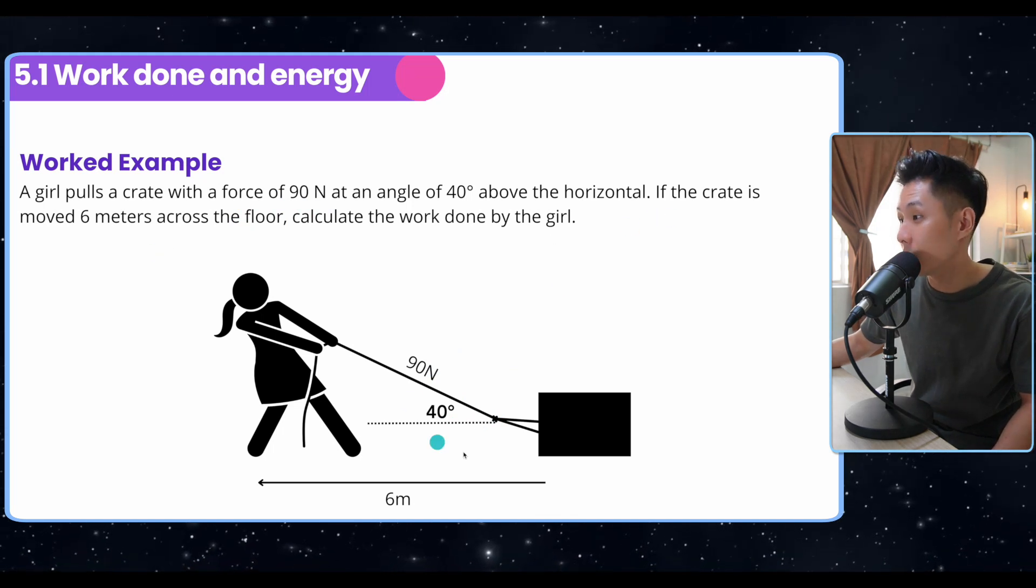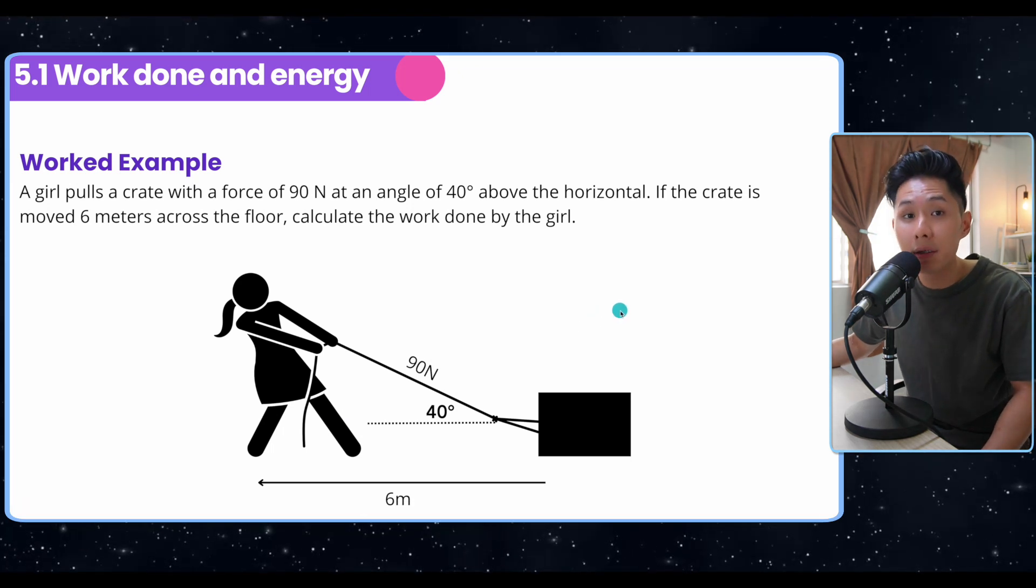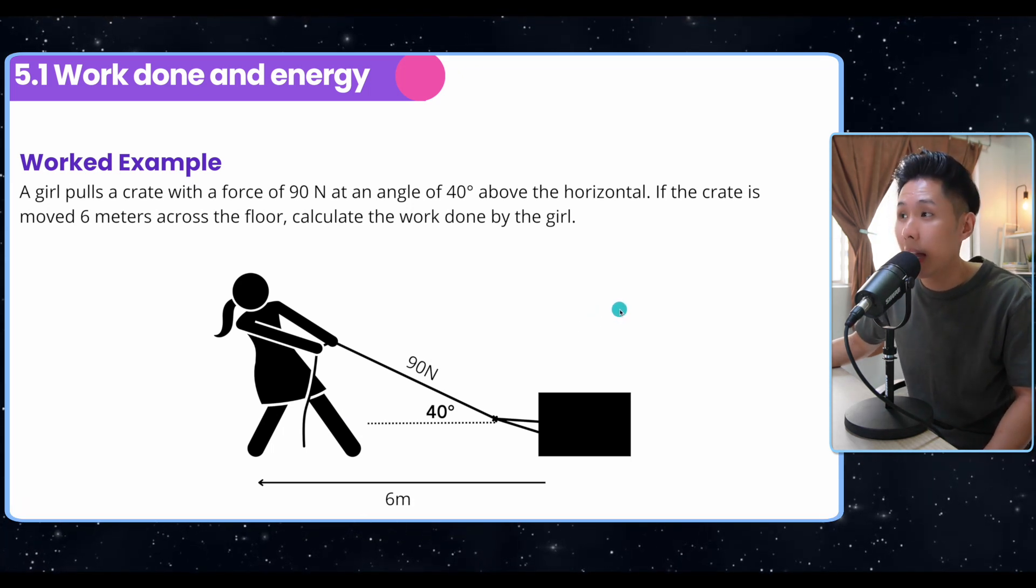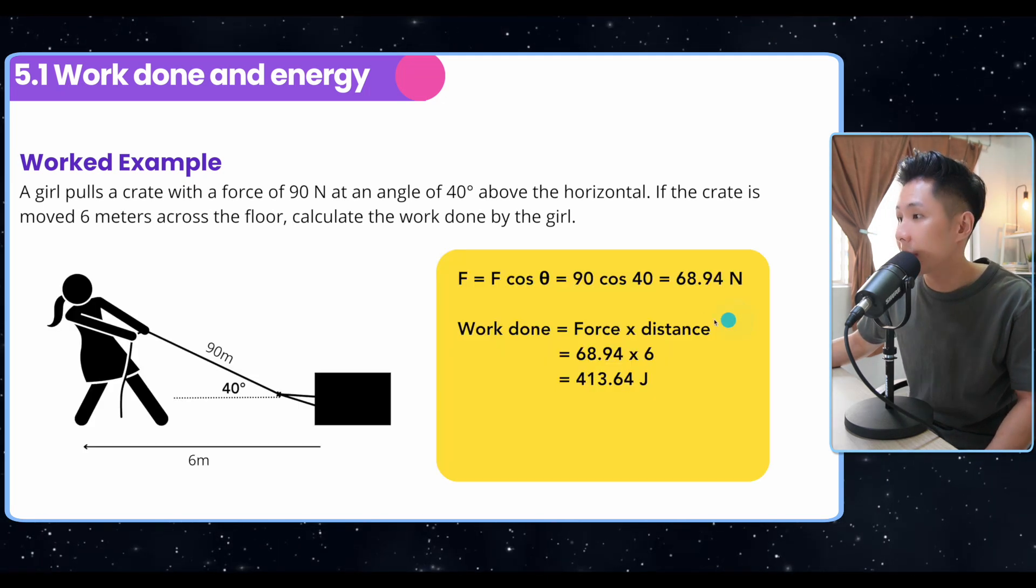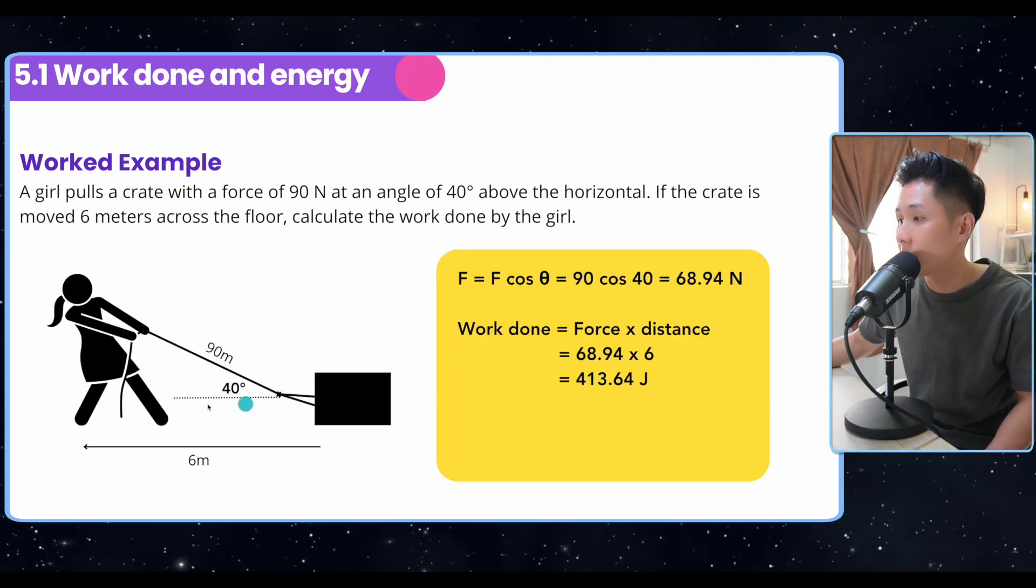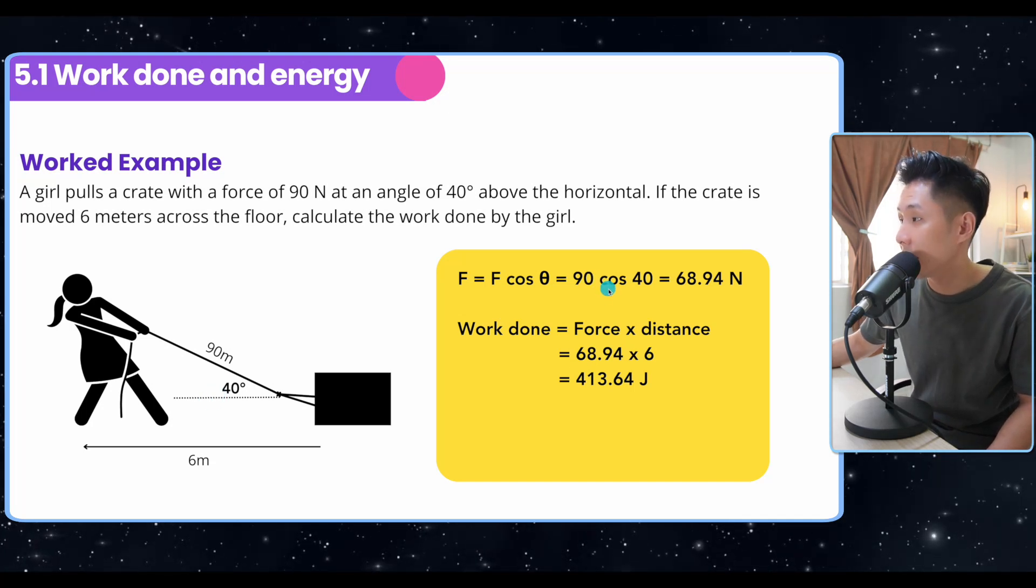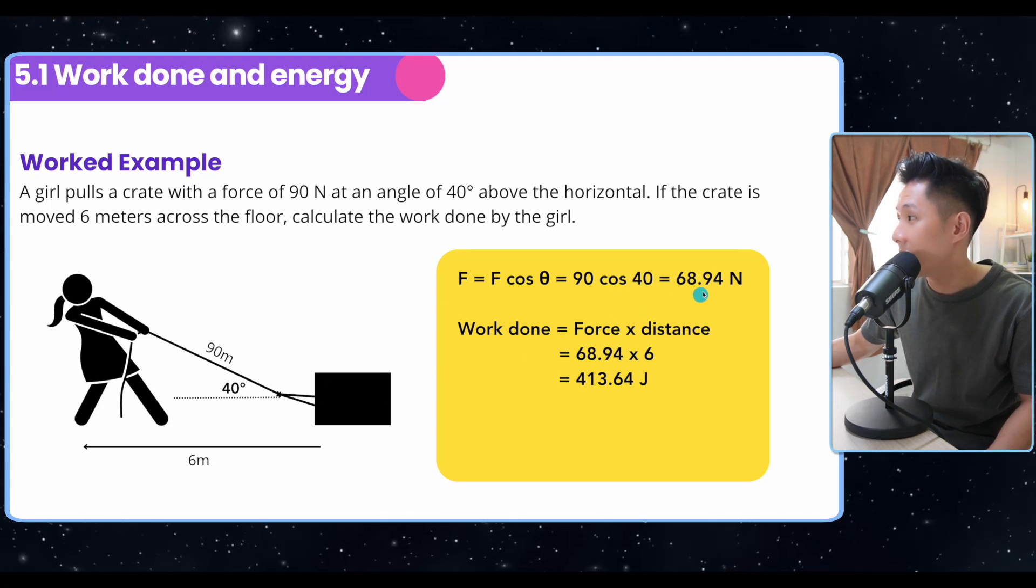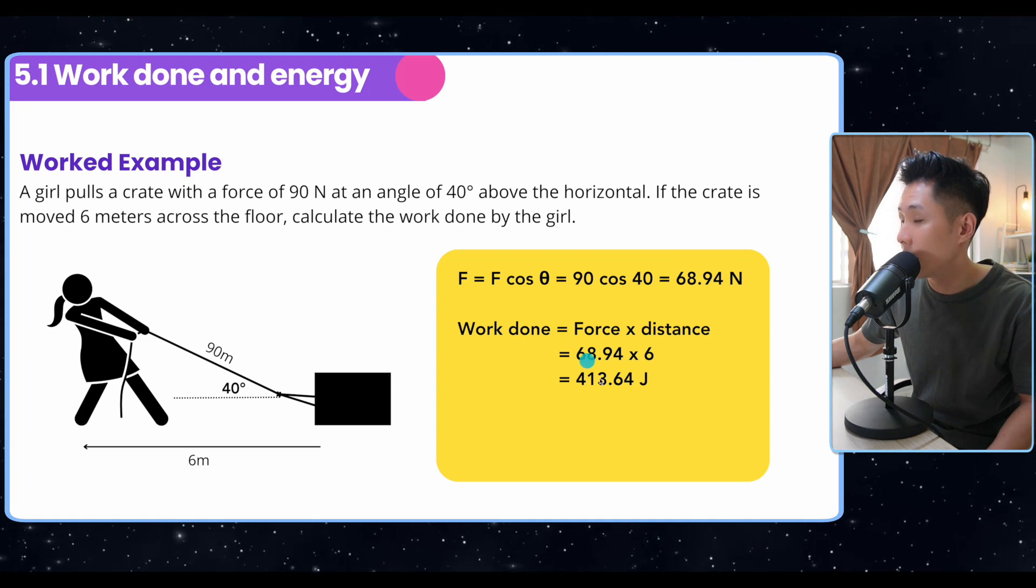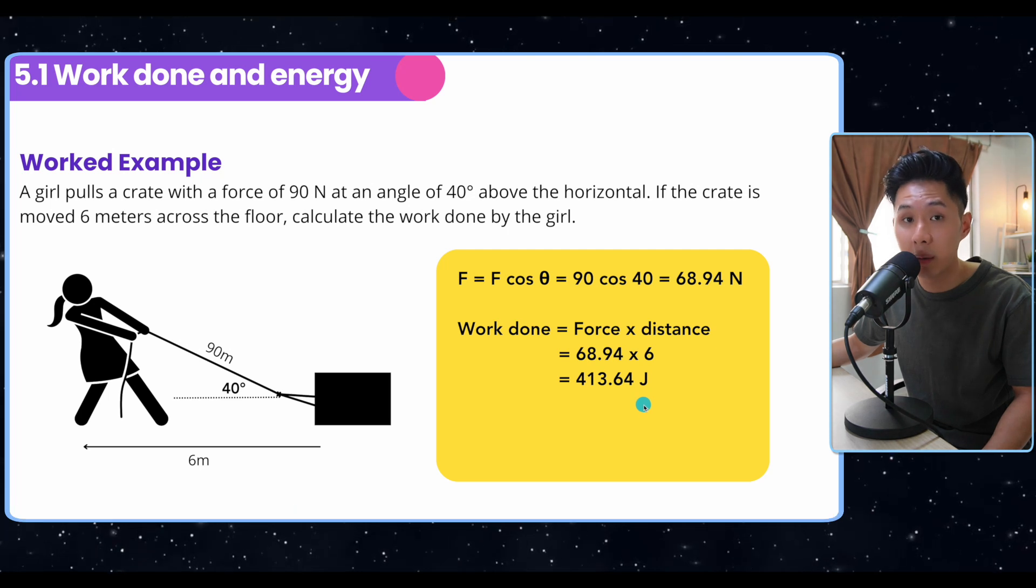If the crate is moved six meter across the floor, calculate the work done by the girl. In this case, we can't just use 90 Newton as the force because this is not the direction which the crate is moved. Instead, we have to calculate the horizontal component of that force using cosine: 90 cos 40 will be 68.94 Newton. And that's the force that we should use in our work done formula. We just multiply by the distance and we should be able to get the work done already.